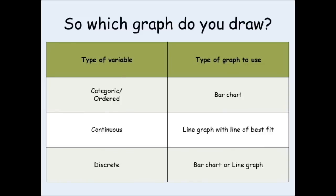So, which graph do you draw? Well, if you have a categoric or ordered variable, so your independent variable is represented with words, then you should be drawing a bar chart. If your independent variable is a continuous variable, so it could be any value, any number, you need to draw a line graph, and draw a suitable line of best fit. The confusing one is if your independent variable is a discrete variable, because then you have the choice of either a bar chart or a line graph.